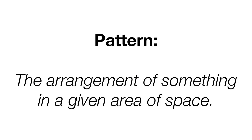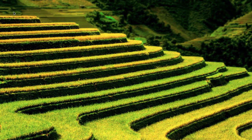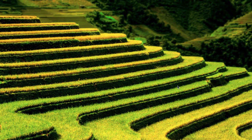Pattern is the arrangement of something in a given area of space. Patterns can be linear, centralized, or random. In this image, you see terrace farming — there is a linear pattern that repeats over and over. This specific pattern is a rice paddy, where rice is planted, and it clearly shows the concept of pattern.